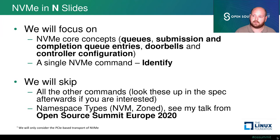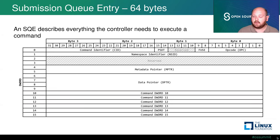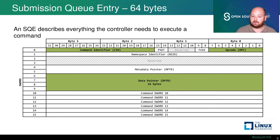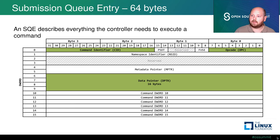Let's first look at the actual submission queue entry. It's a 64-byte payload that describes everything the controller needs to execute a command. There are a lot of fields, but we're specifically interested in three: the command identifier, which is a host-chosen unique ID for a command; the opcode, which together with the actual submission queue uniquely identifies the command the controller should execute; and the data pointer, which describes the payload associated with the command.